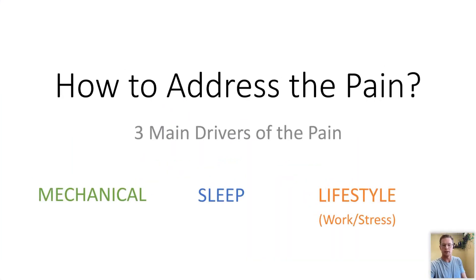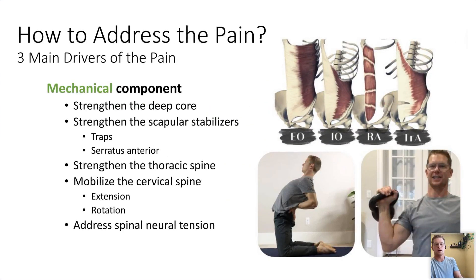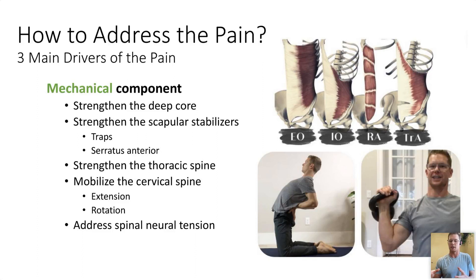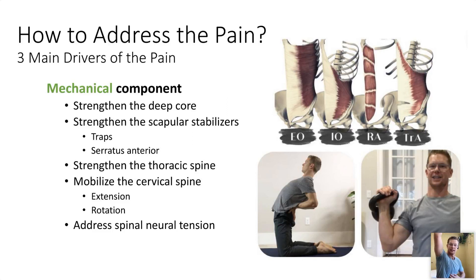How do we address this problem? I bucketed it as three main drivers of pain: the mechanical aspect, the sleep piece, and the lifestyle — work and stress related stuff. On the mechanical component, I needed to strengthen my deep core. The body moves as a system, so I needed to strengthen the entire system. My upper abs were stronger than the lower core, so I was getting pulled down into that position. A strong rectus abdominis pulls you into thoracic flexion and limits how the shoulder girdle can move. So I did a lot of plank-type movements, dead bug, really focusing on drawing in the deep core — that in-and-up action where it's all transversus and obliques and less rectus.